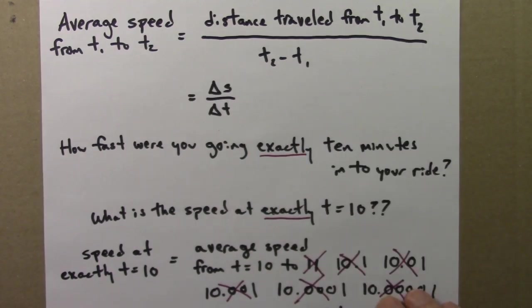As you've probably guessed, this instantaneous speed, or in general this instantaneous rate of change, is known as a derivative.